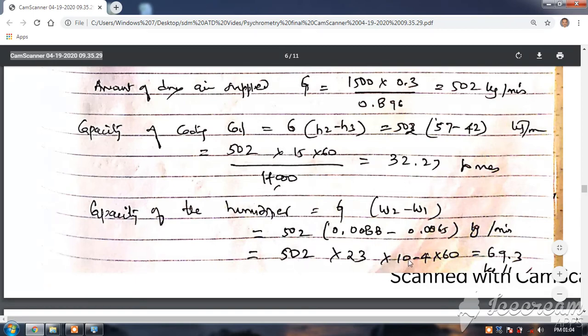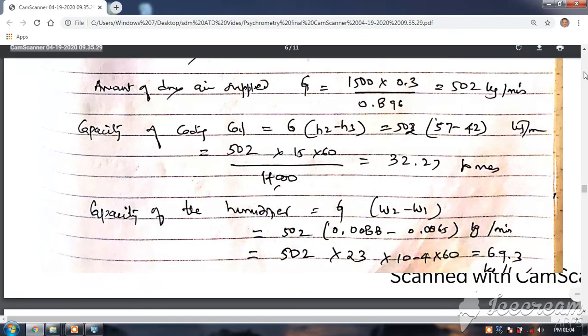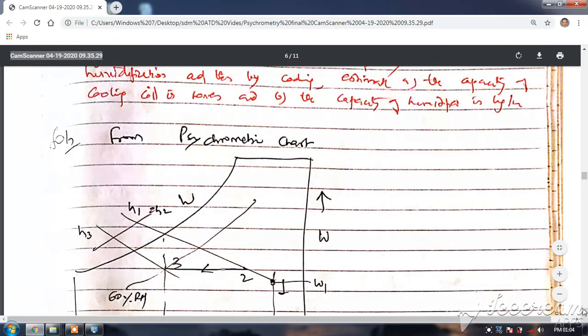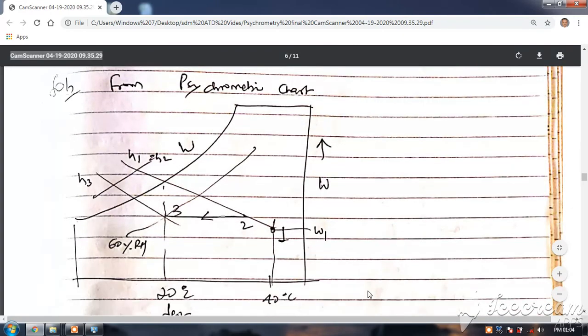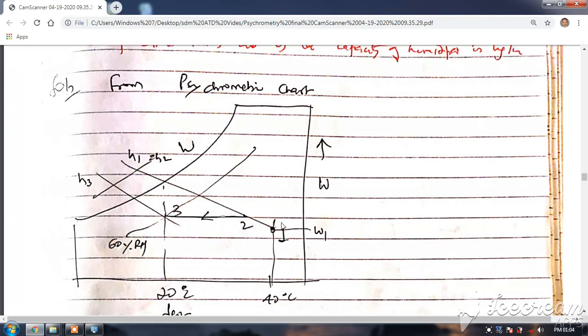This way you can solve the problems on psychometry for designing the air condition halls. You should always know how to plot the two conditions, outdoor conditions and indoor condition, how you connect it and how you find out the enthalpies directly from the graph, how you find the specific humidities directly from the graph.